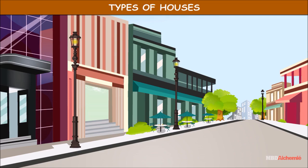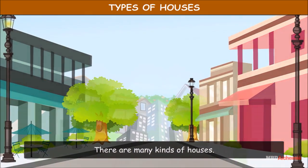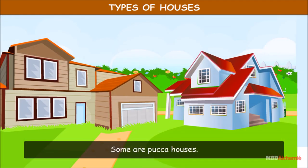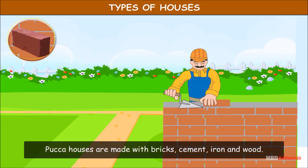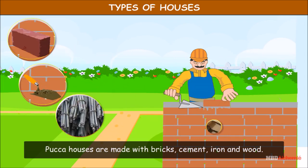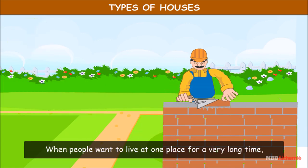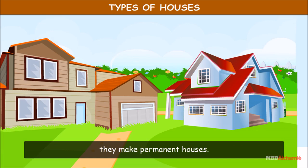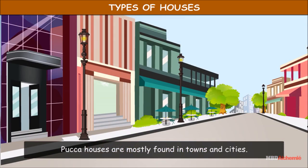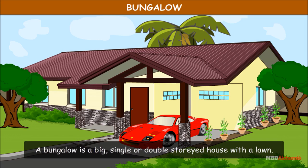There are many kinds of houses. Some are pakka houses. Pakka houses are made with bricks, cement, iron and wood. When people want to live at one place for a very long time, they make permanent houses. Pakka houses are mostly found in towns and cities.